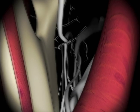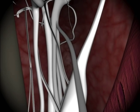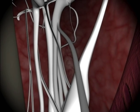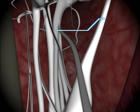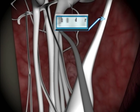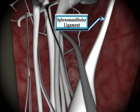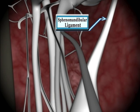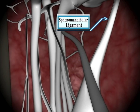Moving further in, we approach the sphenomandibular ligament, which should be to our right or medial. We don't want to be lateral to the ligament, which could prevent diffusion of the anesthetic into our target, the inferior alveolar nerve.